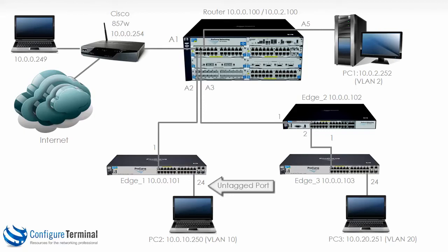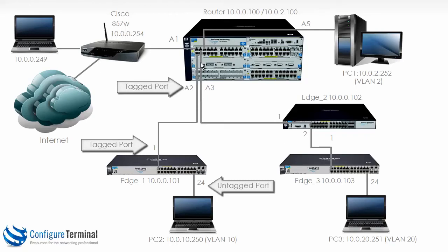However, the link between Edge 1 and the router — our 5406 — needs to be configured as a tagged link. So this interface needs to be tagged for VLAN 10, and this interface on the 5406 side also needs to be tagged for VLAN 10. We need to allow VLAN 10 across this link by creating it as a tagged link or tagged interface.